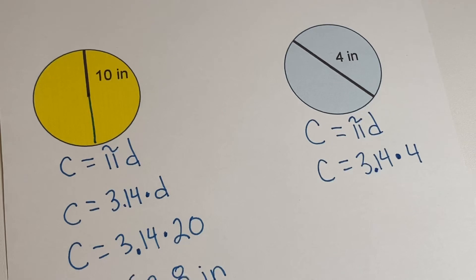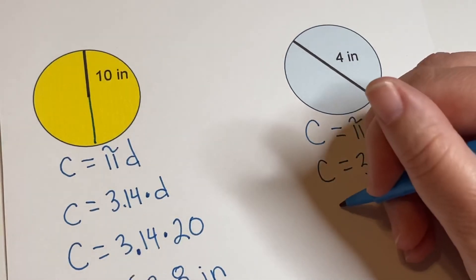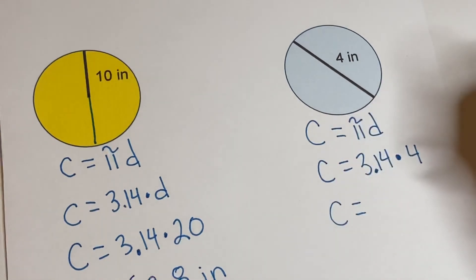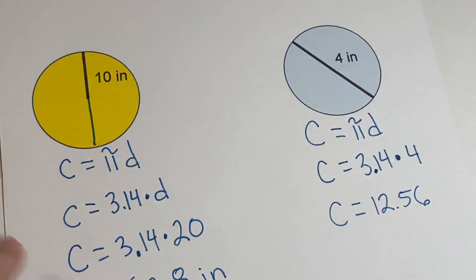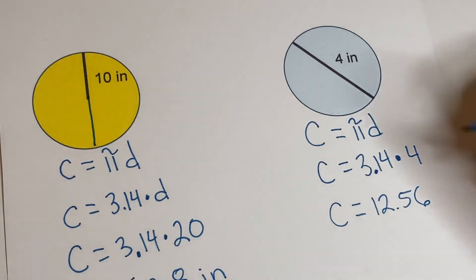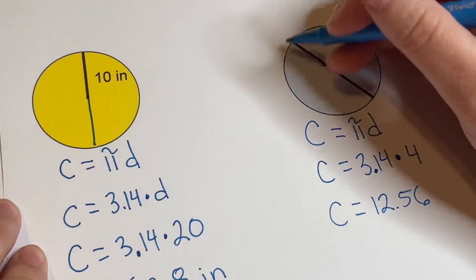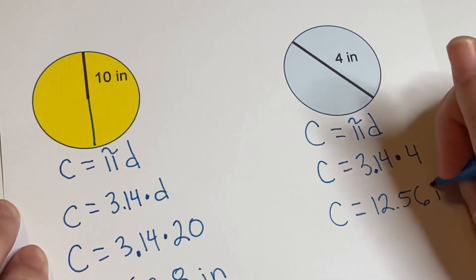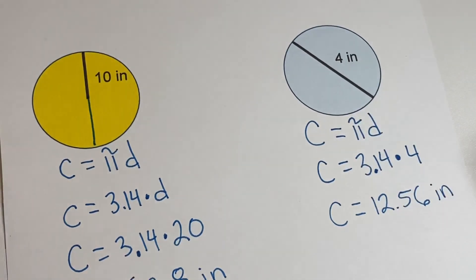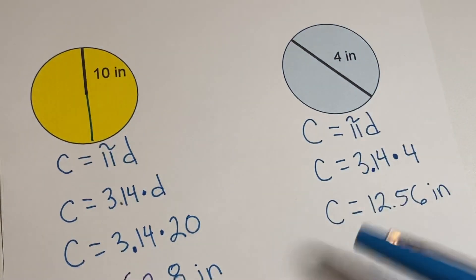We get that the circumference is equal to 12.56. This is circumference, so this is our distance around the outside, and it's in inches. But it will not be squared because circumference is not a two-dimensional thing.